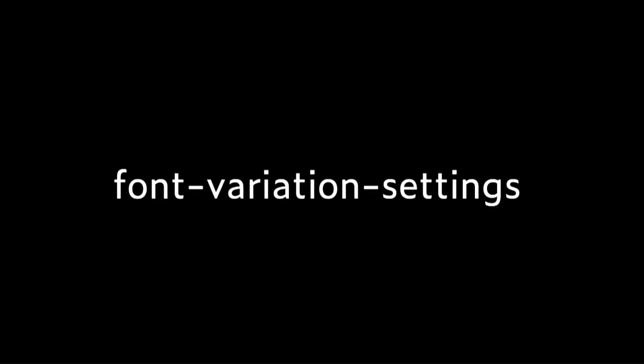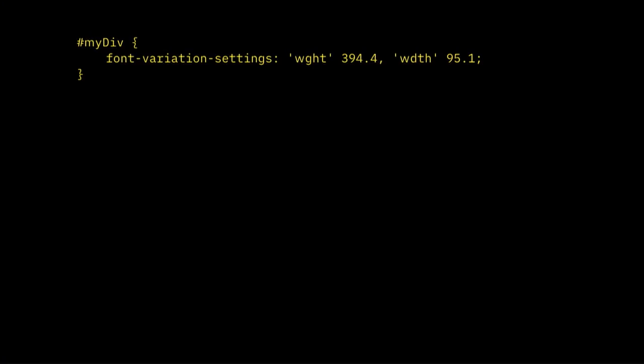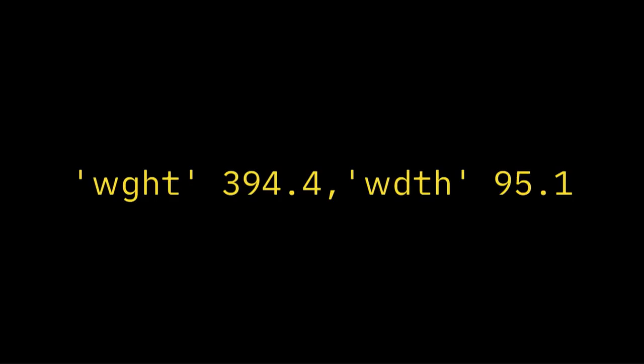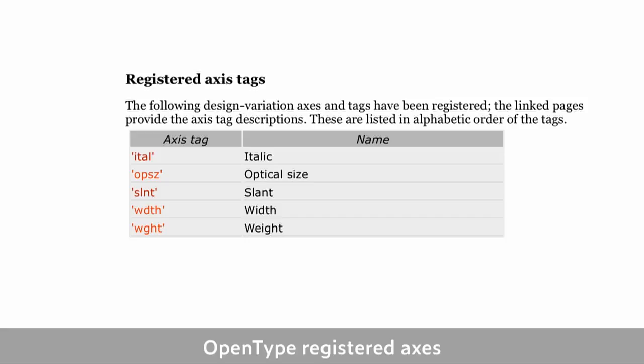How do we control variable fonts? First, with CSS: font-variation-settings is the fundamental one. You'll hear people say, 'don't use this, it's too low level,' but I really encourage you to try it — it's fun. Font-variation-settings, then a list of axes: weight 394, width 95. We have five registered axes, so we can have predictable behavior — we want to know that choosing 600 on a bold scale will be around semi-bold.